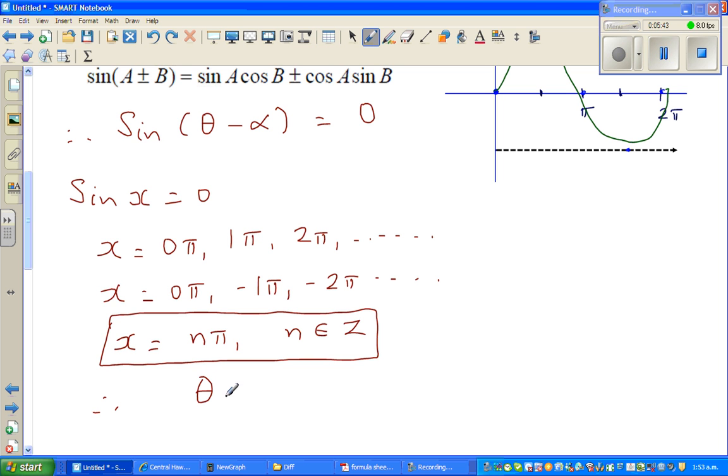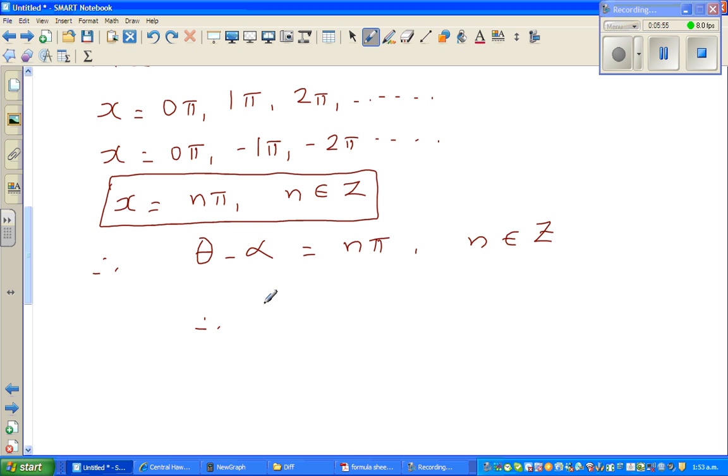θ minus α should be equal to nπ, where n belongs to Z. Now if you add α to both sides, therefore θ is nπ plus α, where n belongs to Z. So this is the general solution, when tan θ can be expressed as tan α.